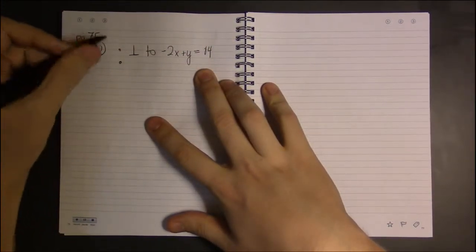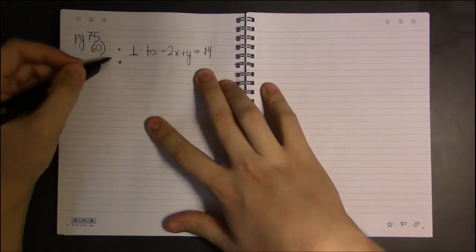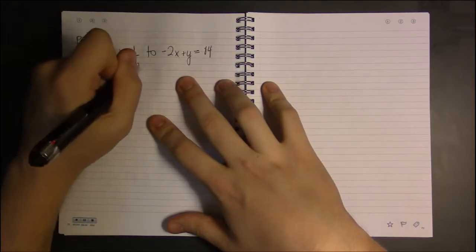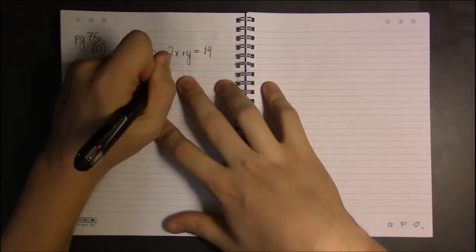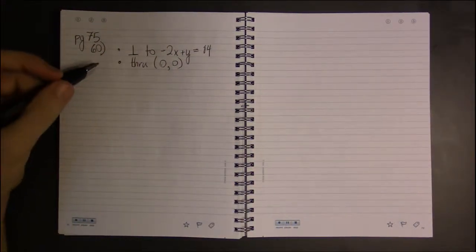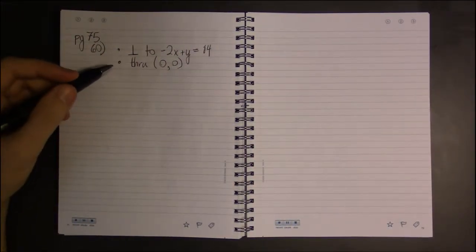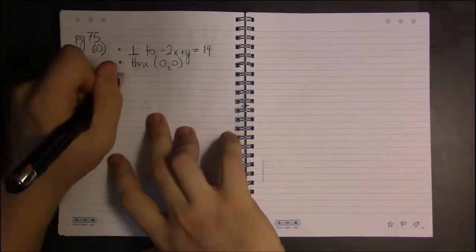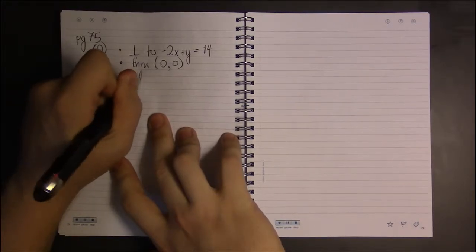We want our line to be perpendicular to -2x + y = 14. The other thing we want our line to do is we want our line to pass through the point (0, 0), better known as the origin. So we're trying to find the equation of the line with these two properties.